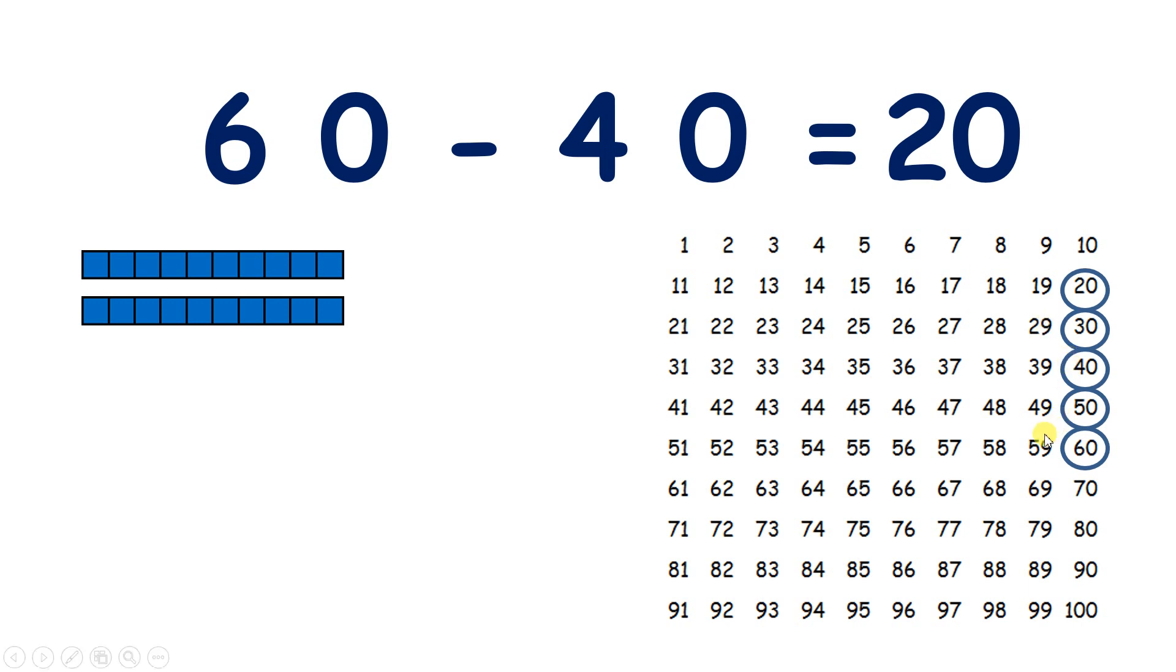But on a 100 square, we know that subtracting 40 means subtracting four tens, so we go up four places on our 100 square.